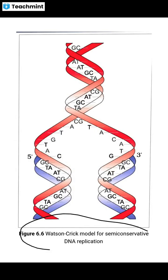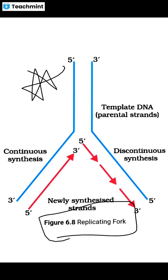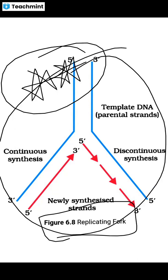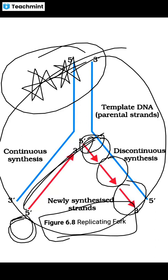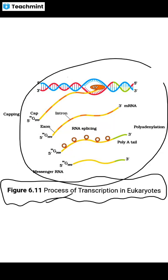For molecular basis of inheritance, the Watson and Crick model and the semi-conservative replication diagram are easy diagrams — just show the two strands and the nitrogenous bases, and label the diagram properly. The replication fork is a very important diagram. Also important is the process of transcription in eukaryotes — if you know the transcription process well, the diagram is not a big deal at all.